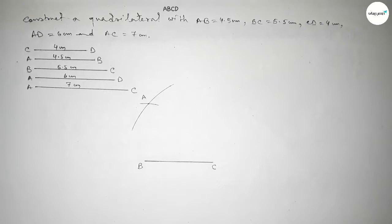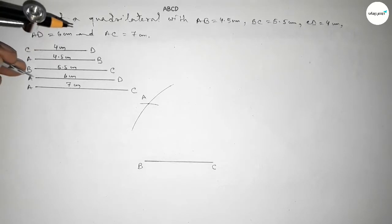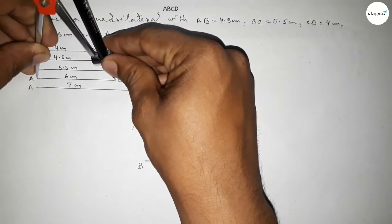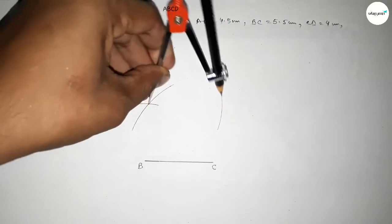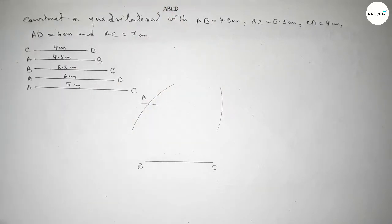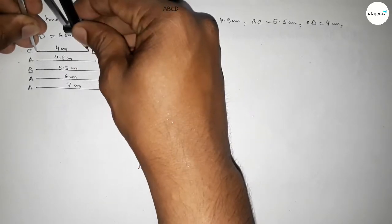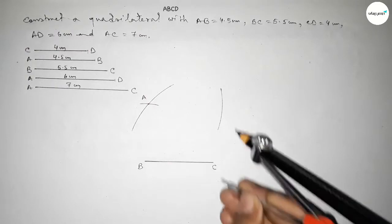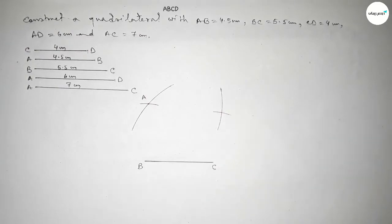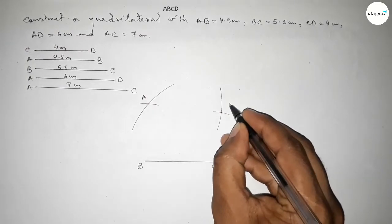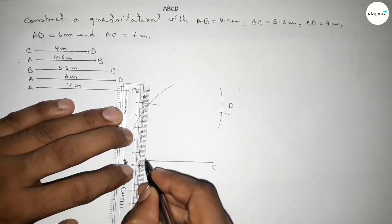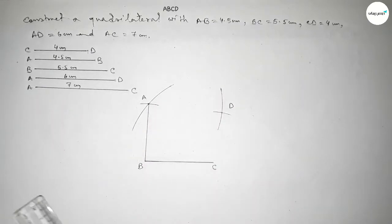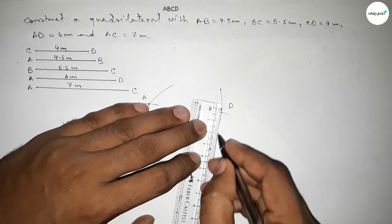Now taking length AD equal to 6 centimeter and putting the compass on point A and drawing an arc. Next taking the length CD equal to 4 centimeter and putting the compass on point C and cutting. Both curves intersect at a point D.